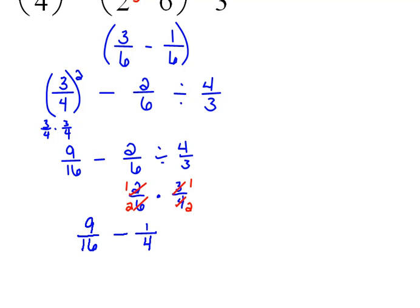Recopy everything else. So now we have 9/16 minus 1/4. We need a common denominator, which in this case would be 16. I'd have to multiply the second fraction by 4.